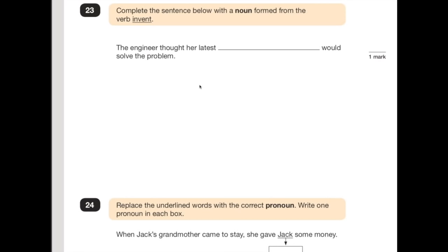Number 23: complete the sentence below with a noun formed from the verb 'invent'. 'The engineer thought her latest [something] would solve the problem.' If we look at the word 'invent', the best noun we can make from it is 'invention'. You've got to make sure you spell these correctly, otherwise you may not get the mark. 'The engineer thought her latest invention would solve the problem' — and it does make sense.